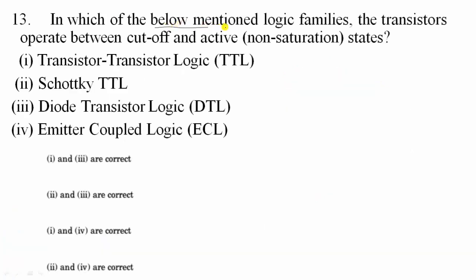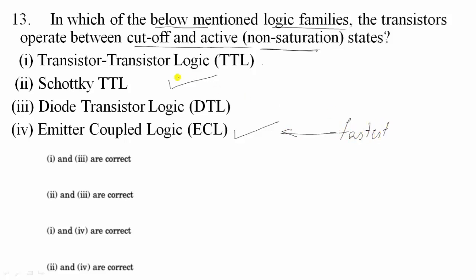Thirteenth question: in which logic families do transistors operate in cutoff and active region only, never entering saturation? That is Schottky TTL and Emitter Coupled Logic (ECL). ECL is the fastest logic. In Schottky TTL, the metal-semiconductor junction prevents transistors from entering saturation, keeping storage time very low. Option D is correct — statements 2 and 4.